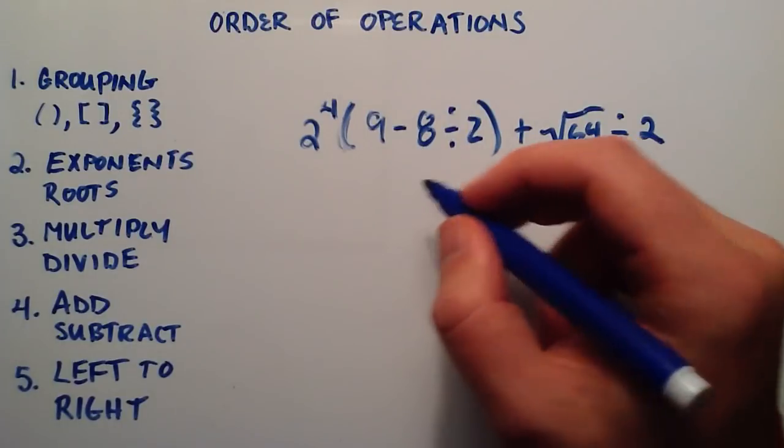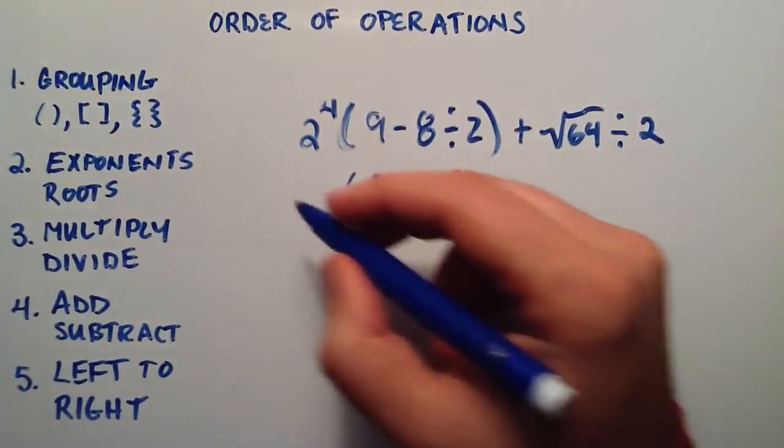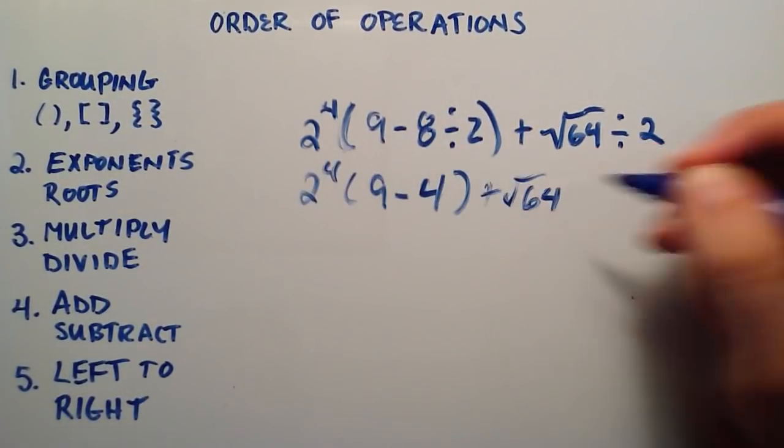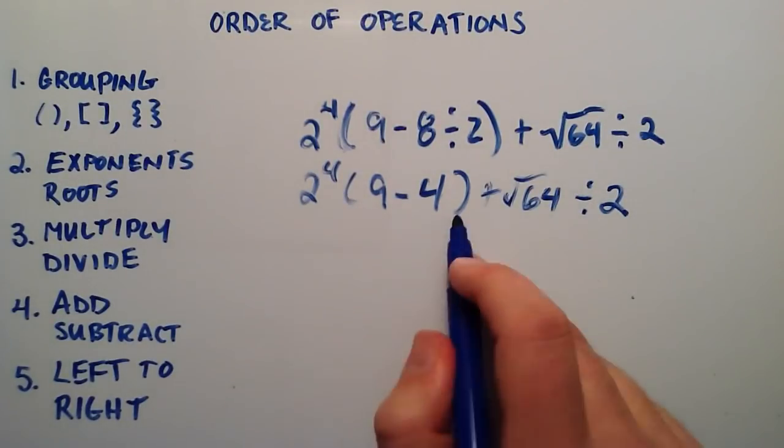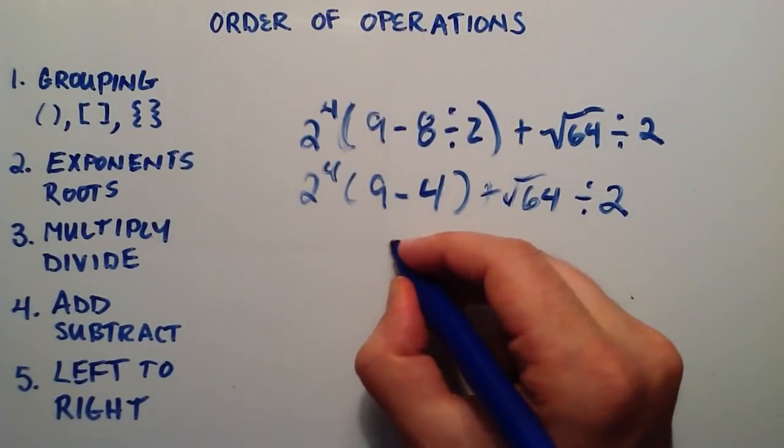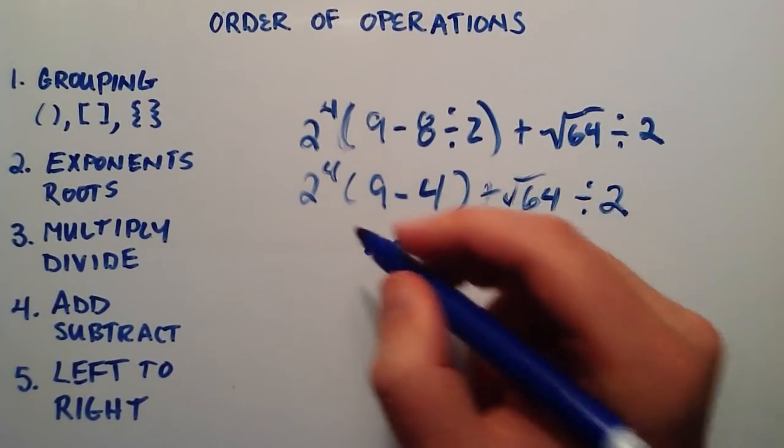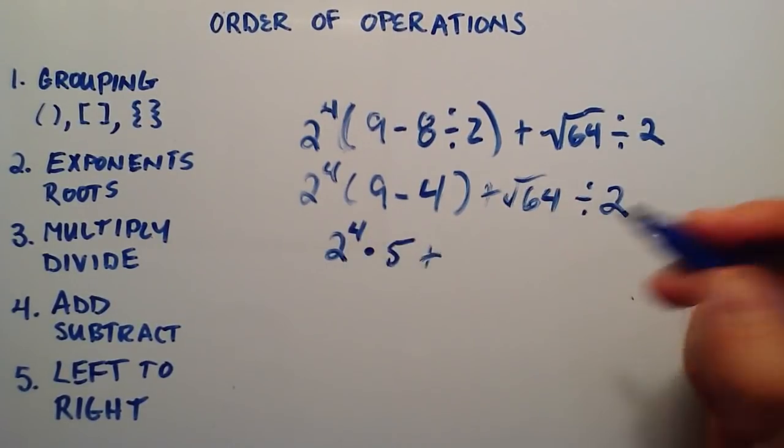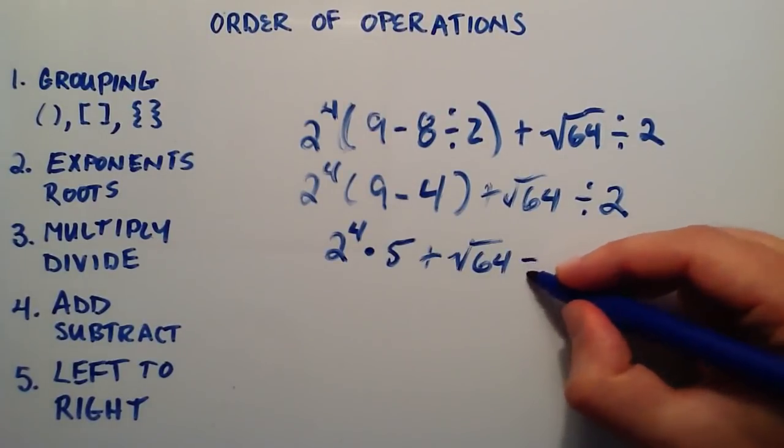8 divided by 2 gives us 4. So we're going to do 9 minus 4 now, because 8 divided by 2 is 4. And we're just going to rewrite everything else in this expression. So now we finish what we started in the grouping. 9 minus 4 gives us 5, and we don't need the parentheses anymore since we're done evaluating the grouping mechanism here. So that's 5 times 2 to the 4th, plus square root 64, divided by 2.